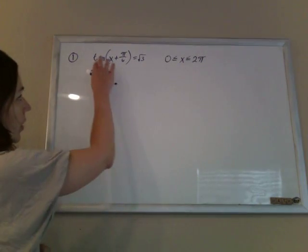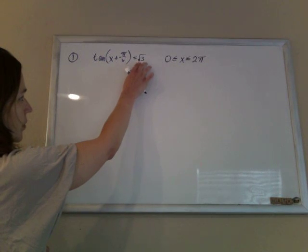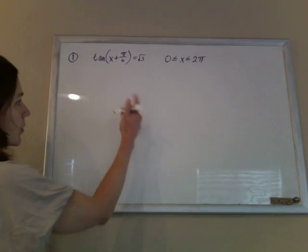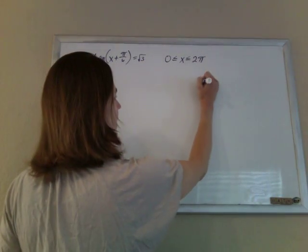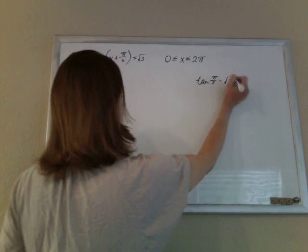Okay, so we're looking for an angle whose tangent is root 3. So the tangent of some angle is root 3. And from our unit circle, we know that the tangent of pi thirds is root 3.